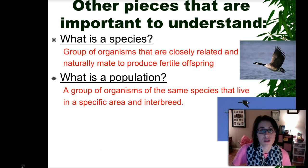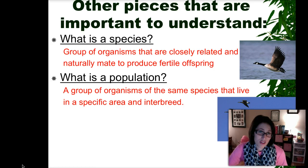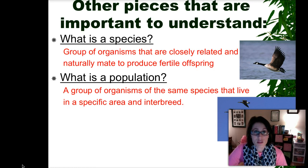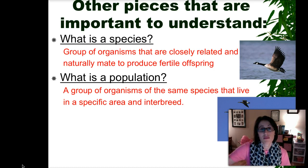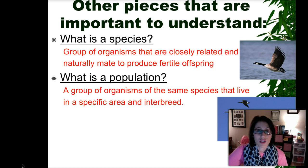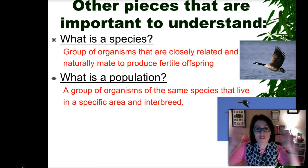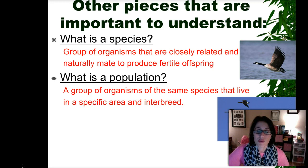So I'm sure you can understand that people didn't like his point of view. But now, in the 21st century, we are accepting that as factual knowledge and we have tons of evidence that supports it. A little bit of information you need to know before we talk about natural selection. A species is a group of organisms that are closely related and naturally mate to produce fertile offspring. Examples of non-fertile offspring would be a mule, which is a cross between a donkey and a horse, or a liger, which is a cross between a tiger and a lion.